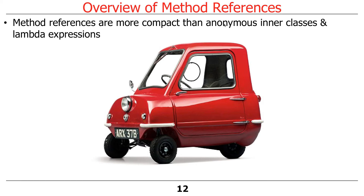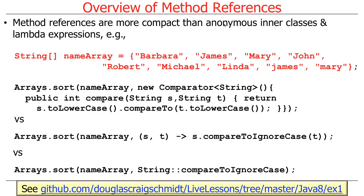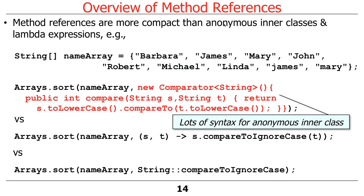Lambda expressions are more compact than anonymous inner classes, and method references are even more compact than lambdas — so they're really, really compact. Let's take a look at an example. Here we've got ourselves an array of strings — just people's names — and these are three different ways we could sort that array using different flavors of Java features.